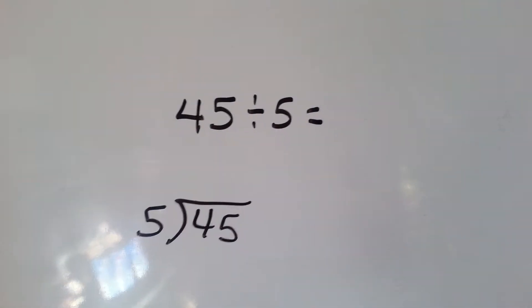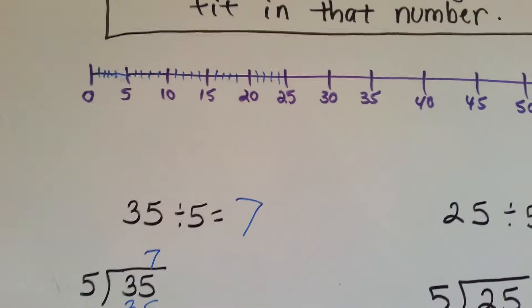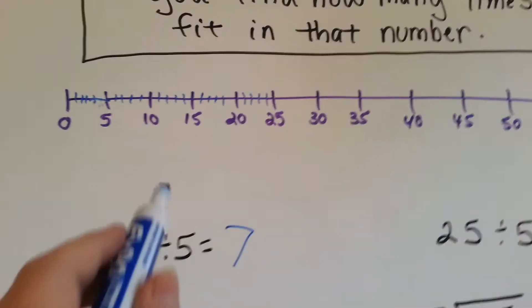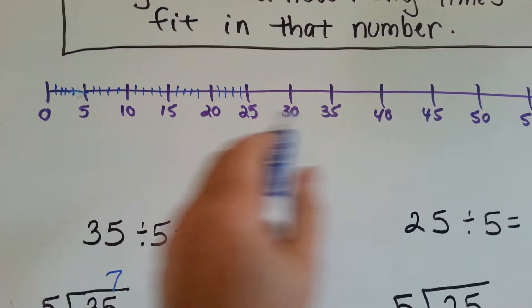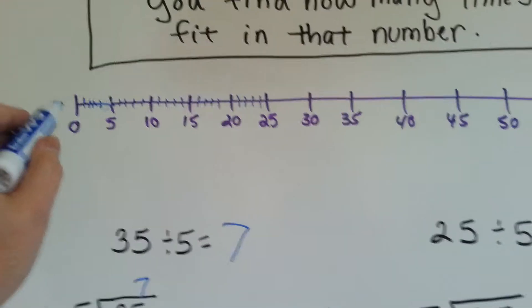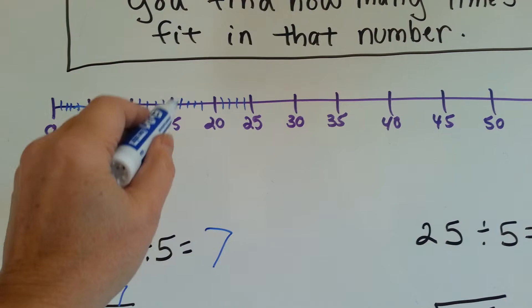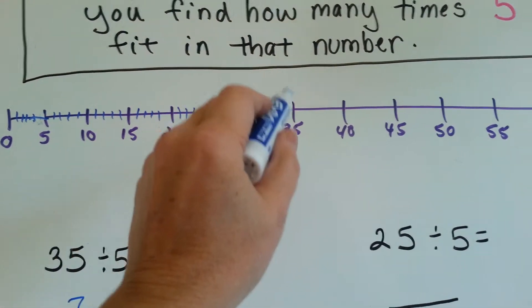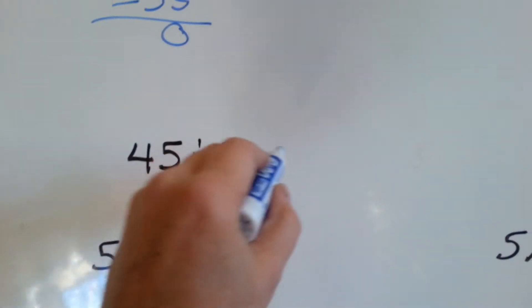45 divided by 5. Let's try it this way. Let's see how many times we're going to jump, because each of these are 5's, till we get to 45. 1, 2, 3, 4, 5, 6, 7, 8, 9. 45 divided by 5 is 9.